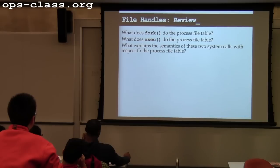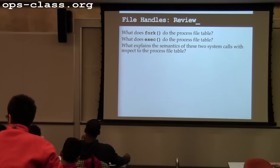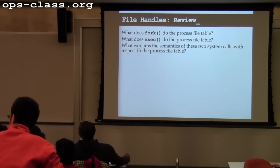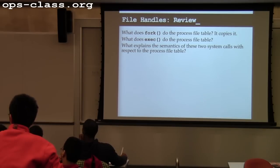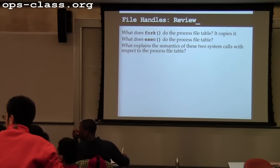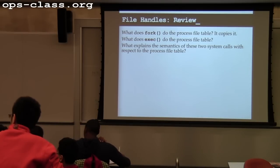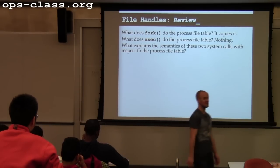File handles and the file table — semantics of fork and exec. What does fork do to the process file table? It makes a copy of it, which means the parent and child are now sharing file handles, because the file table contains file descriptors that are references to file handles. What does exec do to the file table? Nothing — it just leaves it alone.